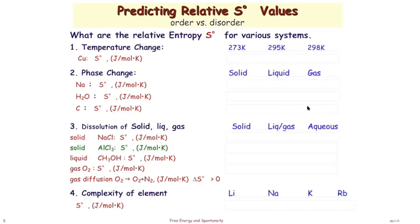Which one has greater microstates? The one at higher temperature, because it has more energy and more vigorous vibration. Which has higher entropy, a solid or a liquid? The liquid, because liquids are not confined to the XYZ plane — they're tumbling, free from each other. Gas molecules are totally separated, so gas has much greater entropy than liquid, and liquid greater entropy than solid. It's the way we envision microstates. So copper solid at 298 is going to have greater entropy.